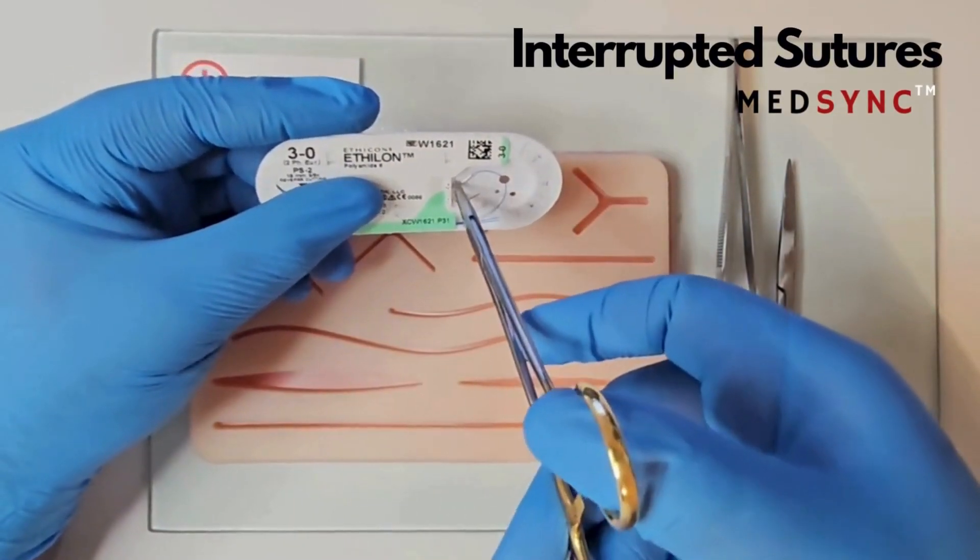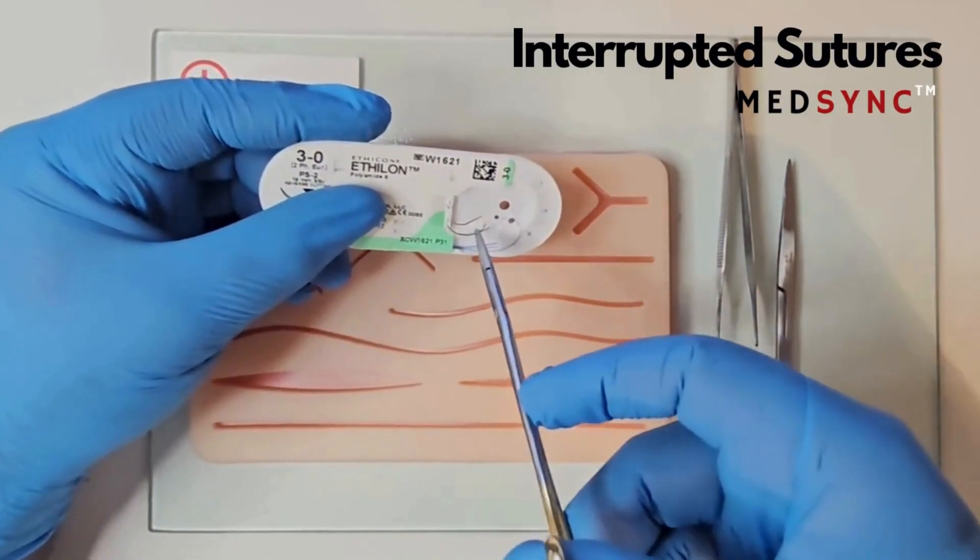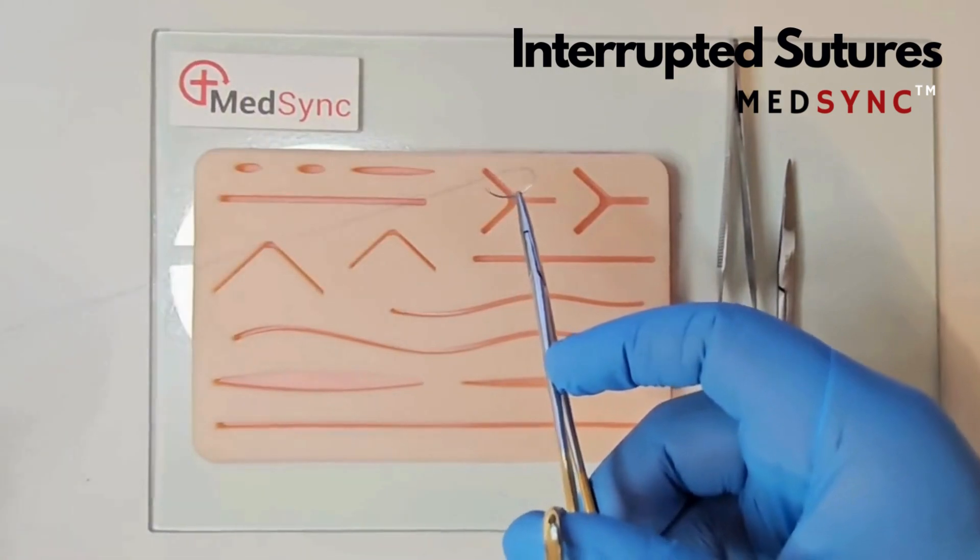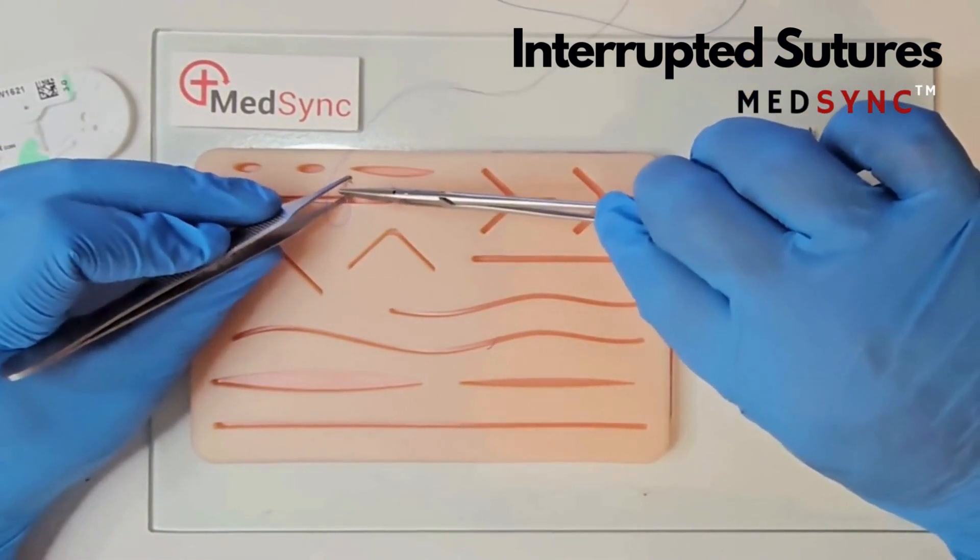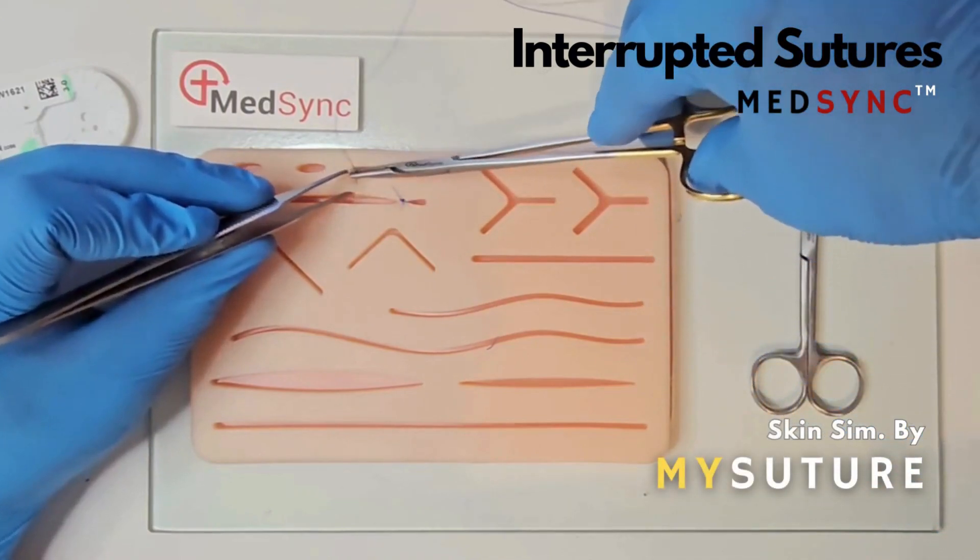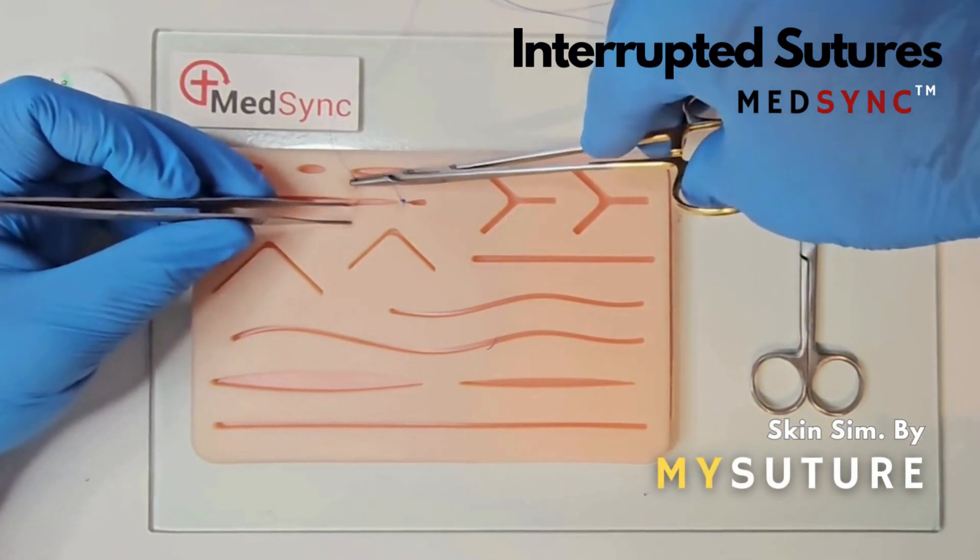Mount the needle in the packet two-thirds along the body. Keep the needle within the surgical field and pull the packet away. Enter the skin at 90 degrees. The hand rotates from prone to supine.